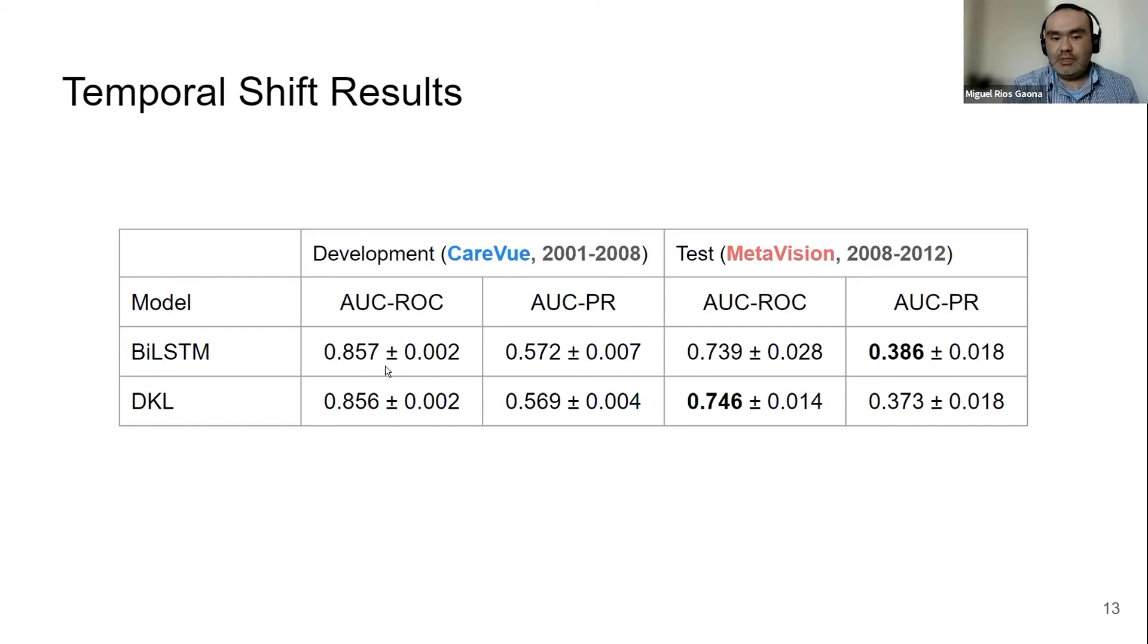As you can see, when the models are in distribution, they have quite similar results. But when we move out of this distribution, when we move to prospective patients, you can see a drop for both models. But the deep kernel learning is a bit better in this case.